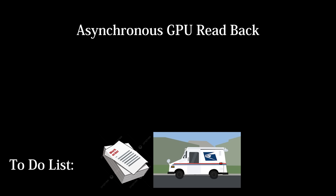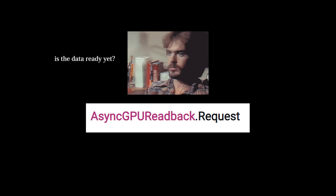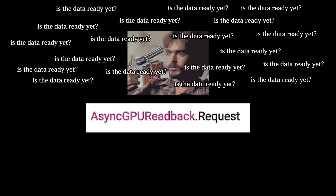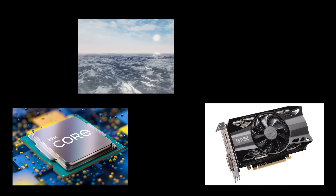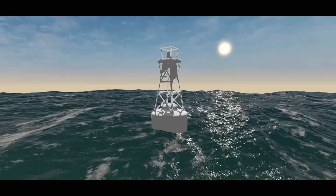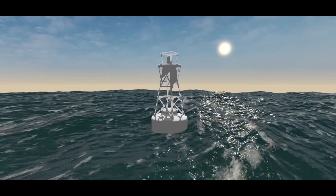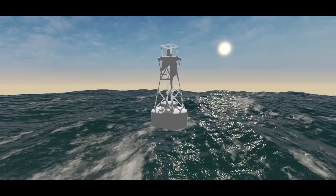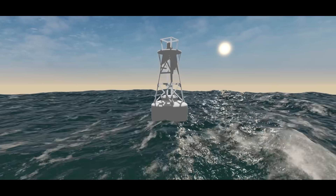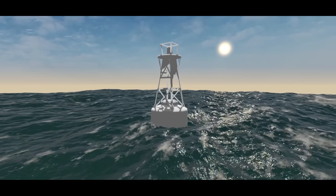How you do these readback requests is engine-dependent. In Unity, it's as easy as converting our buoy's world-space position into pixel coordinates and using this function while asking it over and over again if it's ready yet. With a successful GPU readback, we have our first solution to the buoyancy problem: simply setting the vertical position of the buoy to the height of the water. This clearly demonstrates the lag between readback requests. If we had perfectly accurate data, there would be no visible lag at all, so you can see why we would prefer not to use the readback solution if we can help it, since this much lag would be unacceptable.